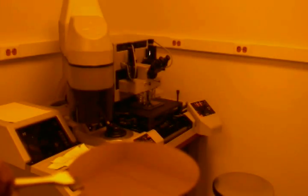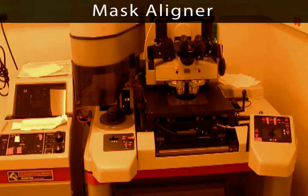Contact mask aligners are used in most microfabrication research laboratories. Nearly all microscale devices and structures require more than one photomask step. The contact aligner allows the user to align microscopic features already on a wafer with those on a photomask. Prior to using the mask aligner, the photomask is mounted onto a glass plate.